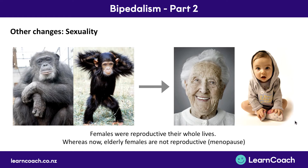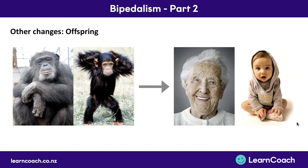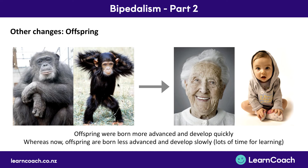Now looking at the offspring themselves rather than the parents — the offspring are also quite different. Young primates are more advanced when they're born and they develop very quickly; within one year old they're largely self-sufficient. Whereas offspring of Homo sapiens are born less advanced and they develop really slowly — often it's 17 or 18 years before people even learn about human evolution.